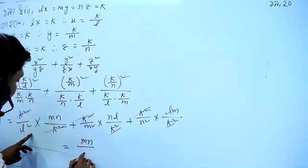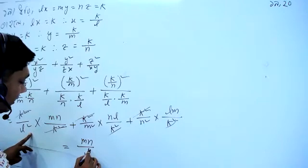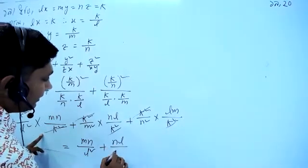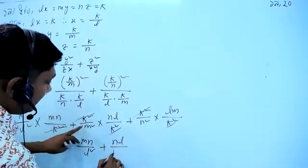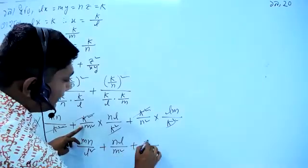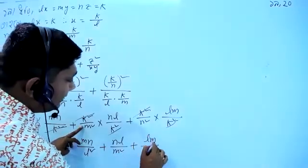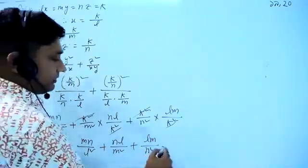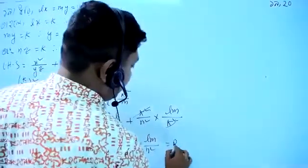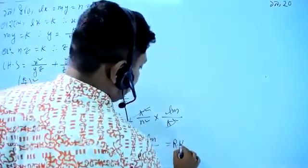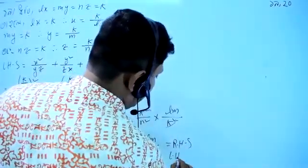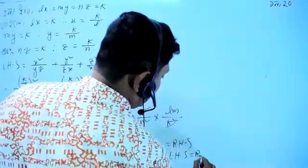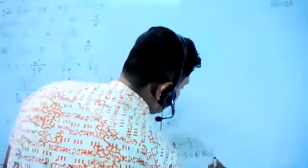mn by l square plus nl by m square plus lm by n square. This is the right hand side. Left hand side equals right hand side. Hence proved.